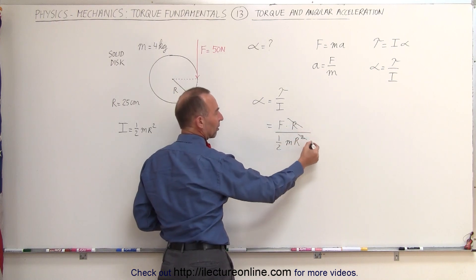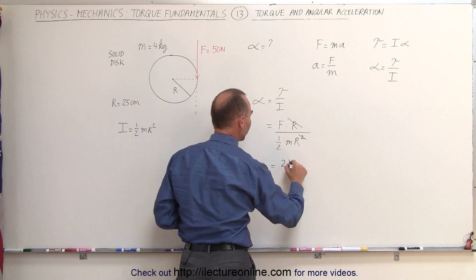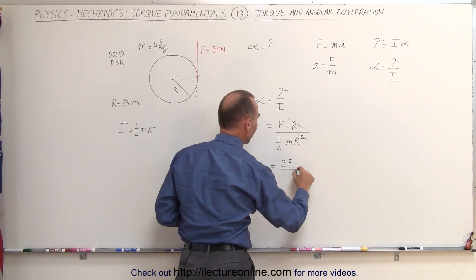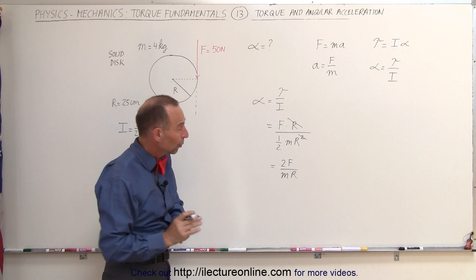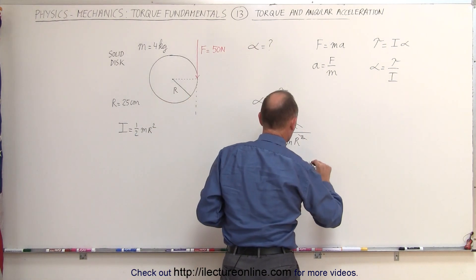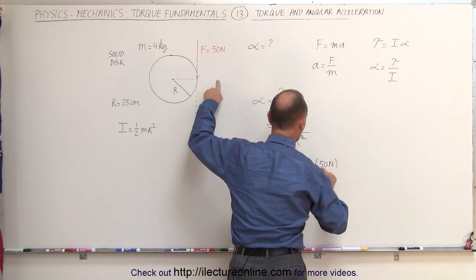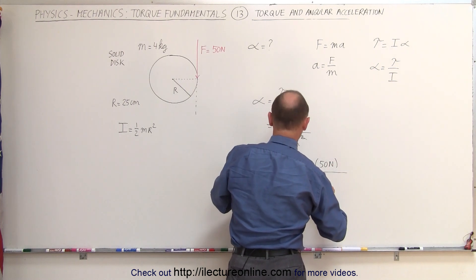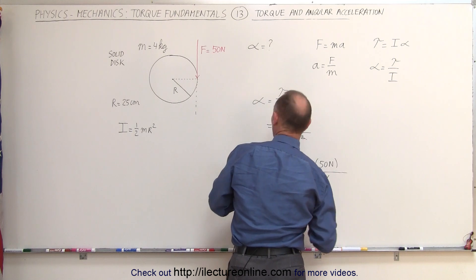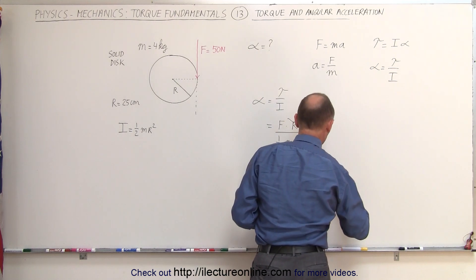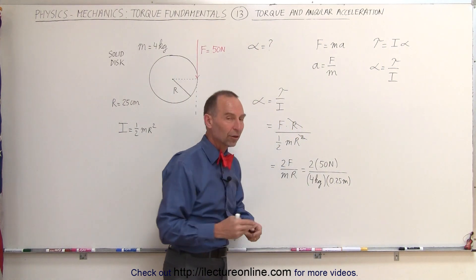Notice that this radius cancels out this radius, the two can go to the numerator, which means that this is twice the force divided by the mass divided by the radius. When we plug in the numbers, we get the following result: 2 times 50 Newtons divided by the mass, which is 4 kilograms, and divided by the radius, which is 0.25 meters. We have to convert centimeters to meters.